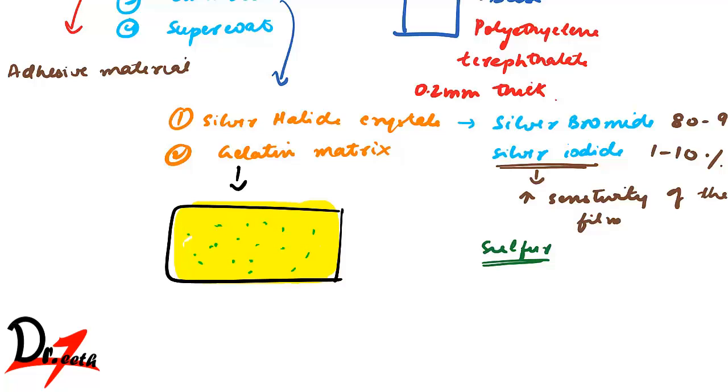And this gelatin, it is made from cattle bone. And it helps the silver grains to be evenly dispersed. And also during processing, the gelatin absorbs the processing solution. So it absorbs the chemicals to react with the halide crystals.